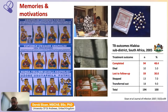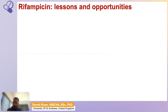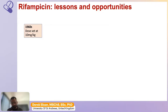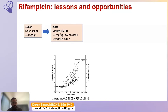A major aim of the field is to shorten the duration of first-line TB therapy. One strategy is increasing the dose of current first-line drugs to see if that makes treatment more effective. Much of the thinking centers on the key sterilizing drug, rifampicin. Rifampicin was developed in the 1950s and started to be used in the 1960s; the initial dose was set at 10 mg/kg once daily because it was affordable and believed to be safe. Some recent data has suggested it might be time to consider changing that dose.